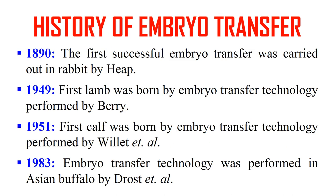A brief history: in 1890, the first successful embryo transfer was carried out in the rabbit by Heap. In 1949, the first lamb was born by embryo transfer technology, performed by Berry. In 1951, the first calf was born by embryo transfer technology, performed by William et al. And in 1983, embryo transfer technology was performed in Asian buffalo by Drost et al.